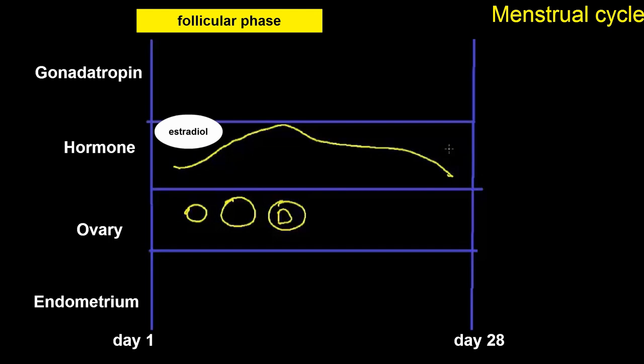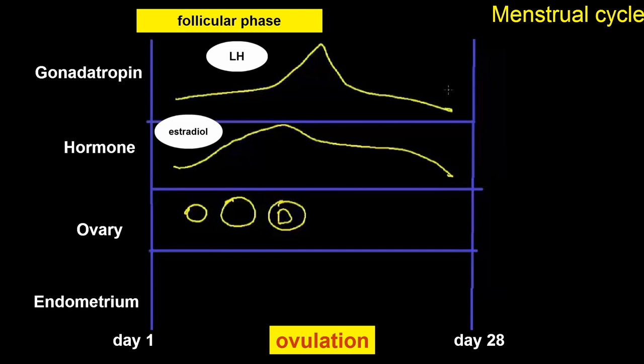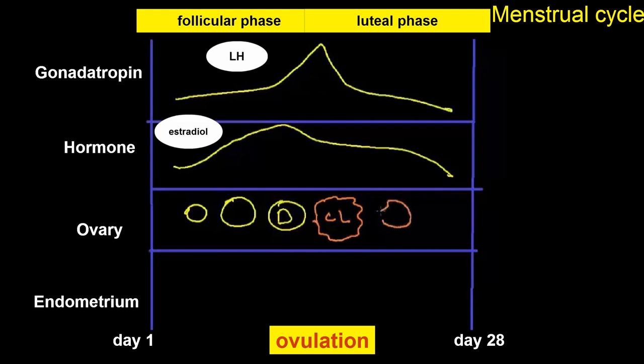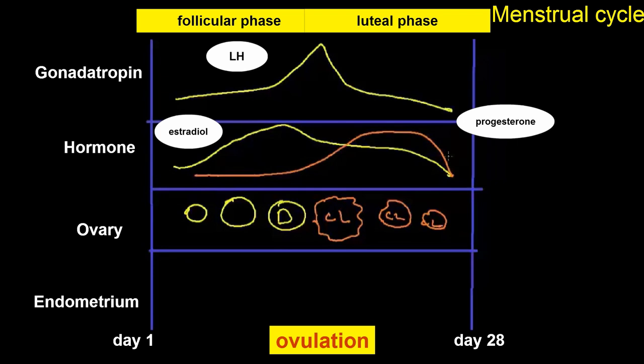This LH surge triggers ovulation. Here you'll see the dominant follicle becoming the corpus luteum after ovulation. This corpus luteum produces large amounts of progesterone, and thus progesterone levels rise rapidly after ovulation. The progesterone has a negative feedback on the pituitary gland. The corpus luteum also produces some estrogen. The uterine lining is stimulated by rising progesterone levels to prepare for implantation, and progesterone stimulates the endometrial lining to become secretory endometrium. The endometrial glands become tortuous and contain secretory material.